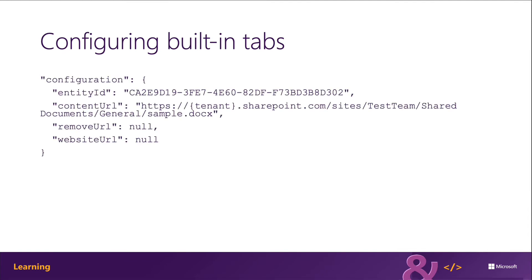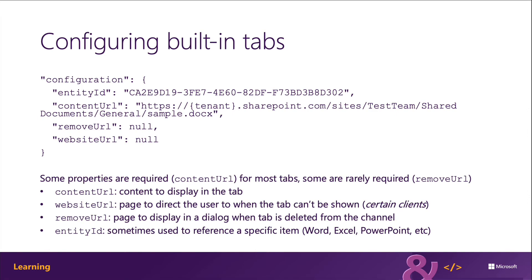Here are the different properties that may be required on the configuration object. The content URL is the content that should be displayed in the tab, and that's going to be required for almost all the tabs. The website URL is going to be used to redirect the user when the tab can't be shown — for example, on a mobile client that doesn't know how to launch the Word tab, it's going to pop it up in an external browser, same thing for Power BI or Planner. The remove URL is a page that should be displayed in a dialog when the tab is deleted from the channel, and the entity ID is sometimes used to refer to a specific item, as you'll see when we do a demo for adding a tab for Word or Excel.